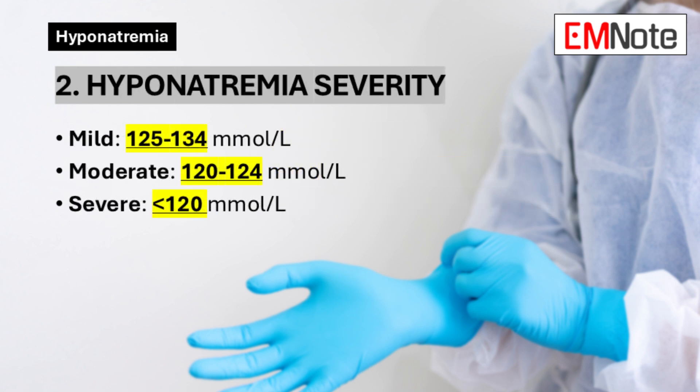Point 2: Hyponatremia Severity. The severity of hyponatremia is categorized based on the serum sodium level. Mild: 125 to 134 millimoles per liter. Moderate: 120 to 124 millimoles per liter. Severe: less than 120 millimoles per liter.